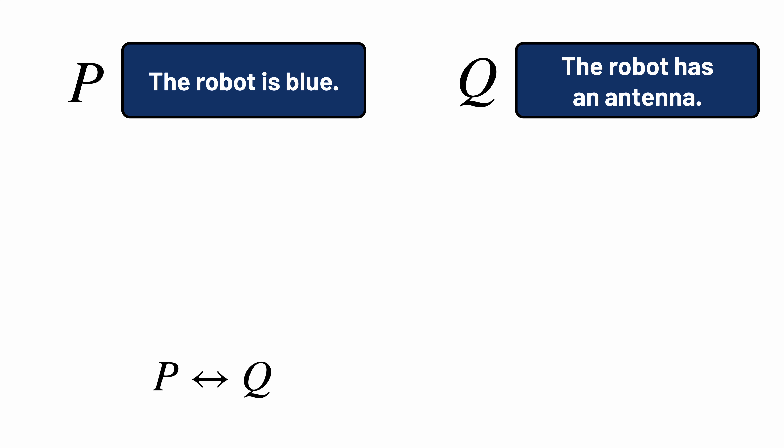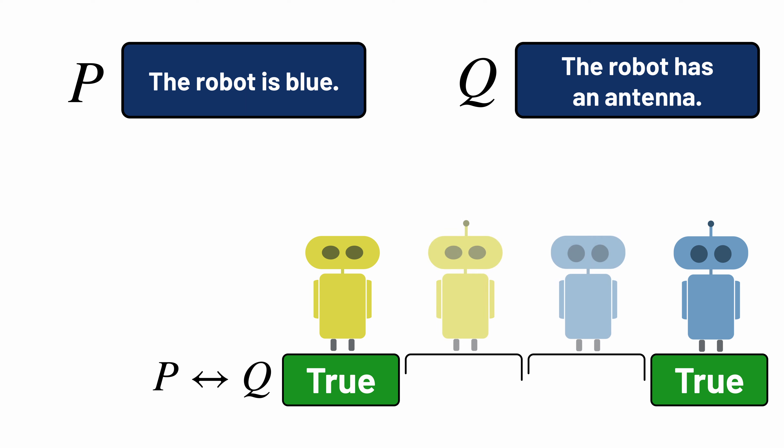Here, it's true for a blue robot with an antenna. Or if the robot is not blue and has no antenna, but it's false if only one of the two propositions is true.